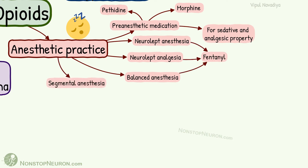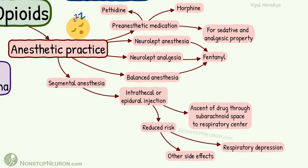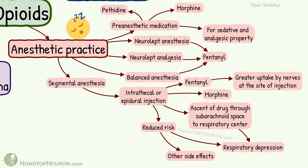To produce segmental anesthesia, opiates can be given by intrathecal or epidural injection. This route decreases the risk of respiratory depression and other side effects. However, ascent of the drug through subarachnoid space to the respiratory center can cause respiratory depression — this is more frequent with morphine. Fentanyl, on the other hand, shows greater uptake by nerves at the site of injection, so there is less respiratory depression.